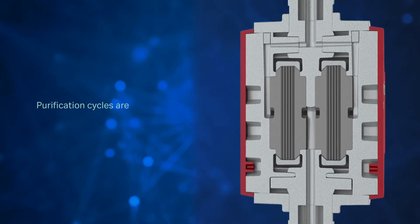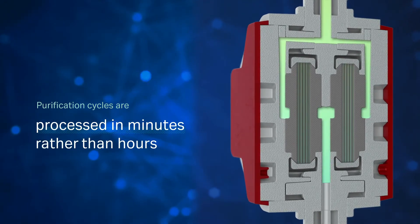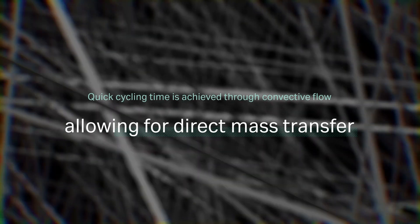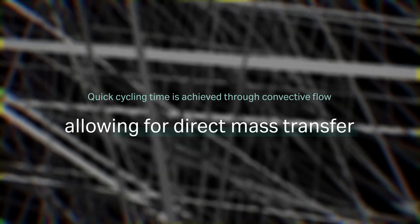Purification cycles with fibro are processed in minutes rather than hours when using conventional chromatography methods. The quick cycling time is achieved through convective flow, allowing for direct mass transfer, enabled by macro porosity and high surface area.